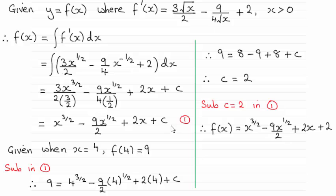So in order to work out c, I've called this 1, and we know that the curve goes through the point with x coordinate 4 and a y coordinate of 9. So I just need to substitute these values into 1, as you can see I've done here.